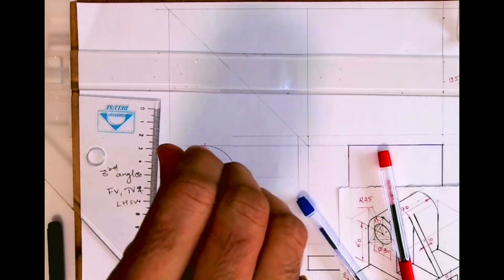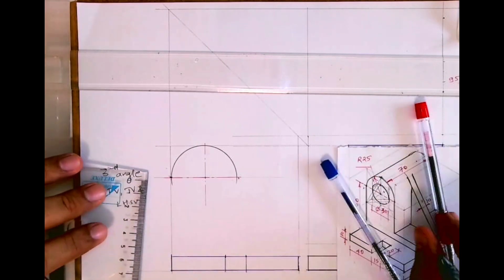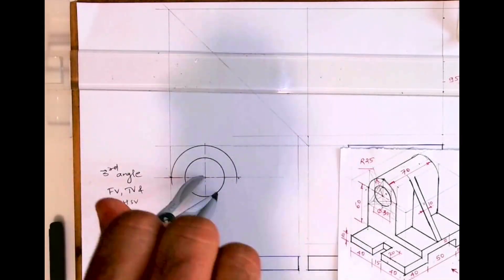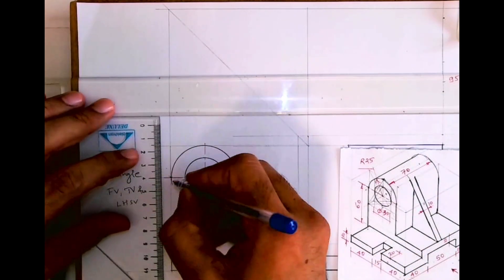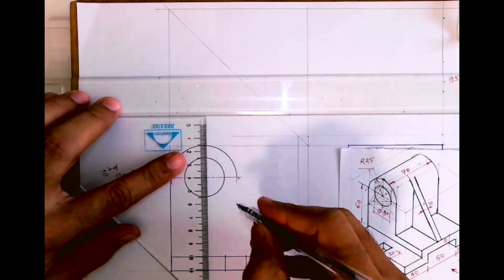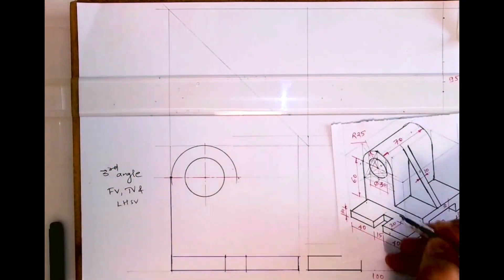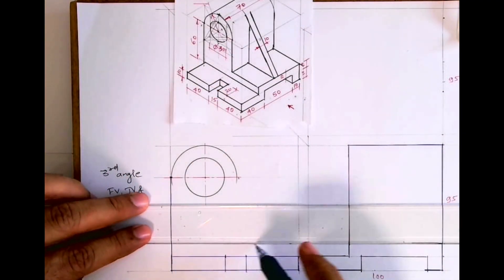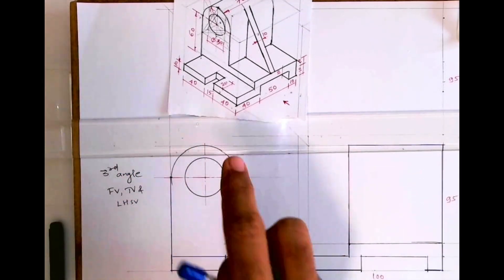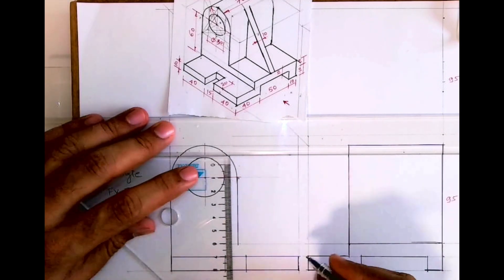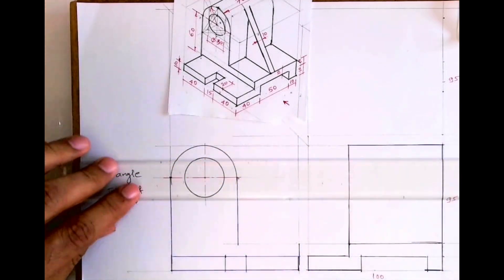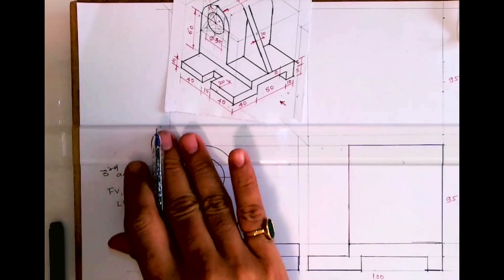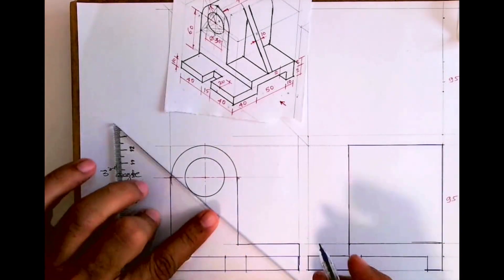So now you draw circle of radius 25, and again you draw radius 15. Then you draw a vertical line. See how much is the side, 10. Draw this line lower part, and then we need to draw this slope.